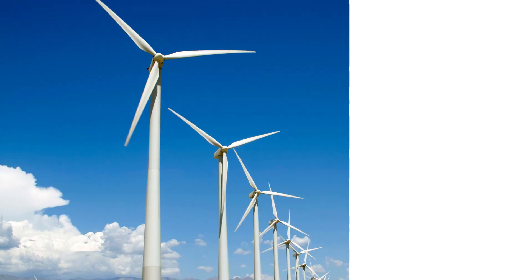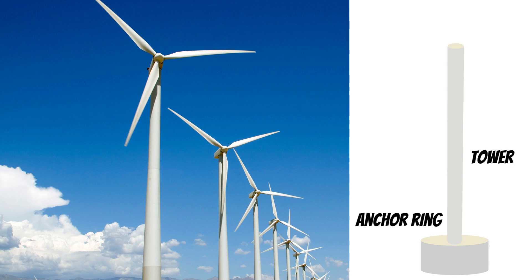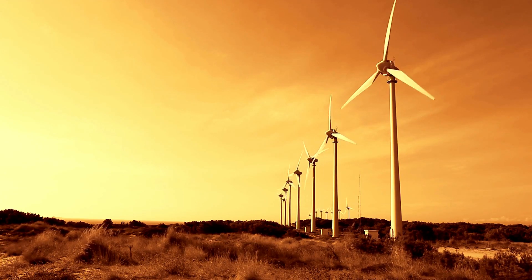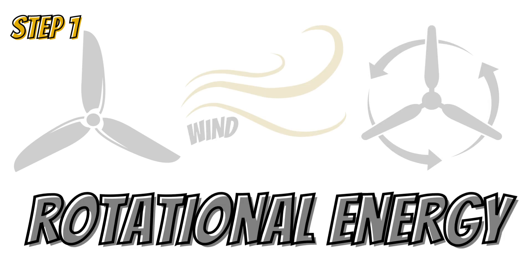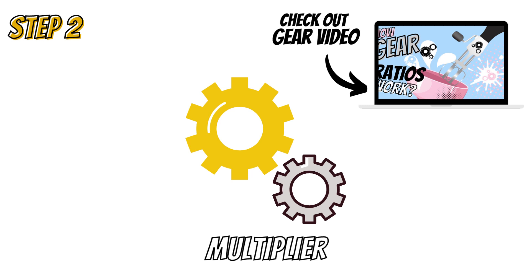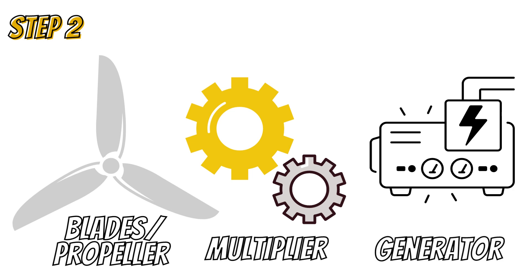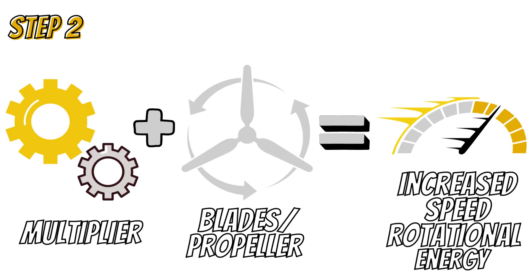The turbine structure consists of an anchoring ring, a tower, and the blade. The rotor, which consists of three large blades, is forced by the wind to rotate and produce rotational energy. Within the engine is a multiplier, also known as a gearbox, located between the propeller and the generator. The job of the multiplier is to increase the speed of the rotational energy produced.